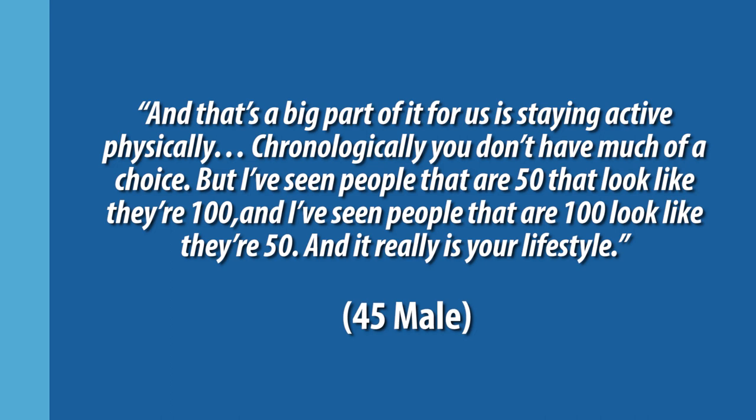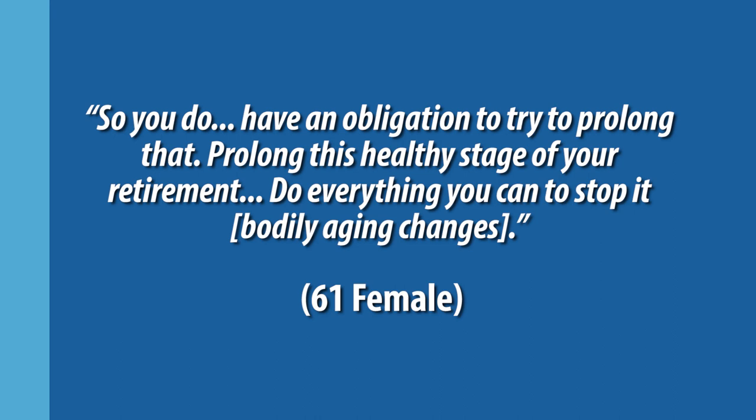In line with positive aging discourses, informants actively strived to project themselves as people who were in control of their aging and had made choices to not let their aging bodies go. For example, a 45-year-old male conveyed that staying active physically was a big part of retirement planning for him and his wife, and that really is your lifestyle that influences how old you will look, and that body work can enable you to look, act, and feel younger than your chronological age. Informants also framed themselves as having an obligation, personally and societally, to work on their bodies so as to keep them fit, youthful, and healthy. For example, a 61-year-old female emphasized that you have an obligation to try to prolong the healthy stage of your retirement and do everything you can do to stop it — referring to bodily decline associated with aging and oldness. Informants provided detailed descriptions of how they engaged in various types of activities, such as dieting, exercising, and consuming age-defying products to monitor, maintain, and optimize their bodies.